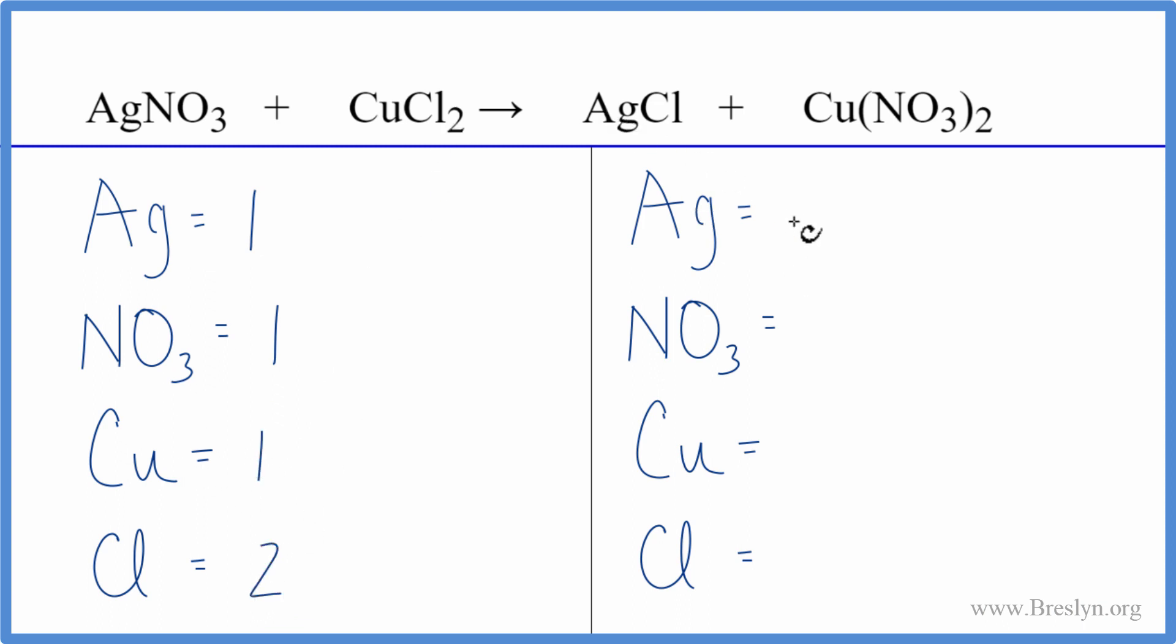On the product side, we have one silver. We have the one nitrate times the two, so we have two of them here. One copper, and one chlorine. It looks like the chlorines and then the nitrates, those aren't balanced.